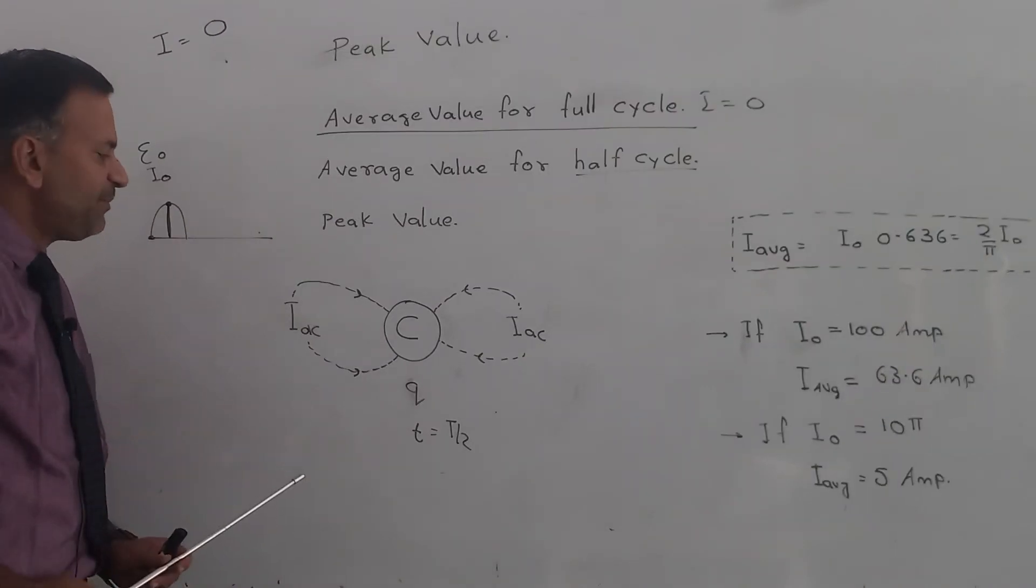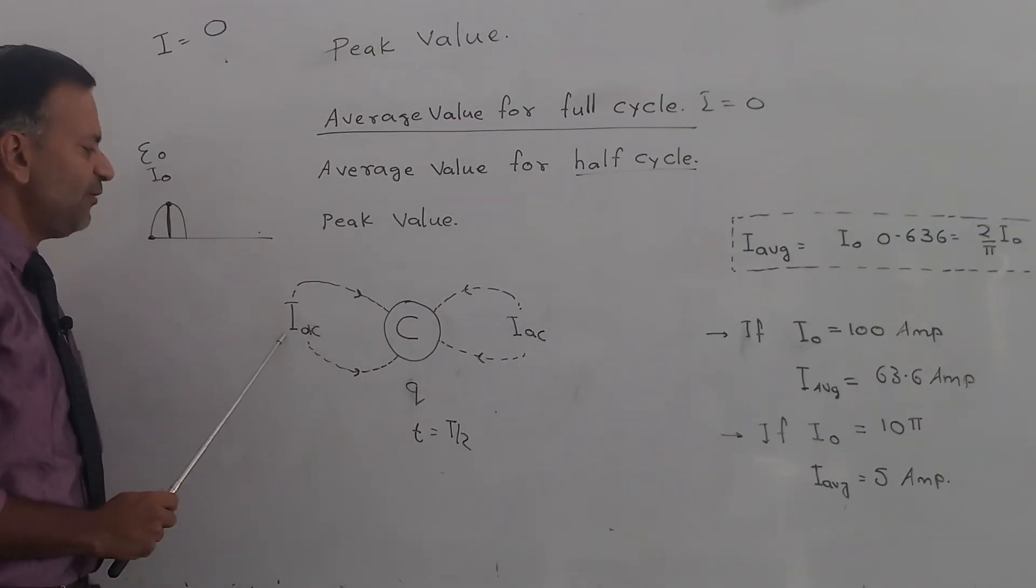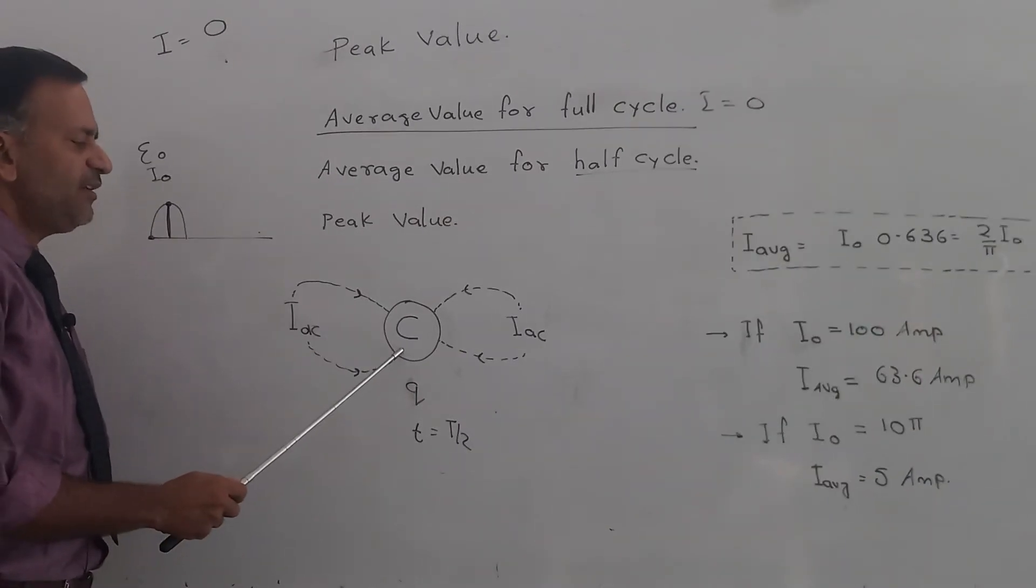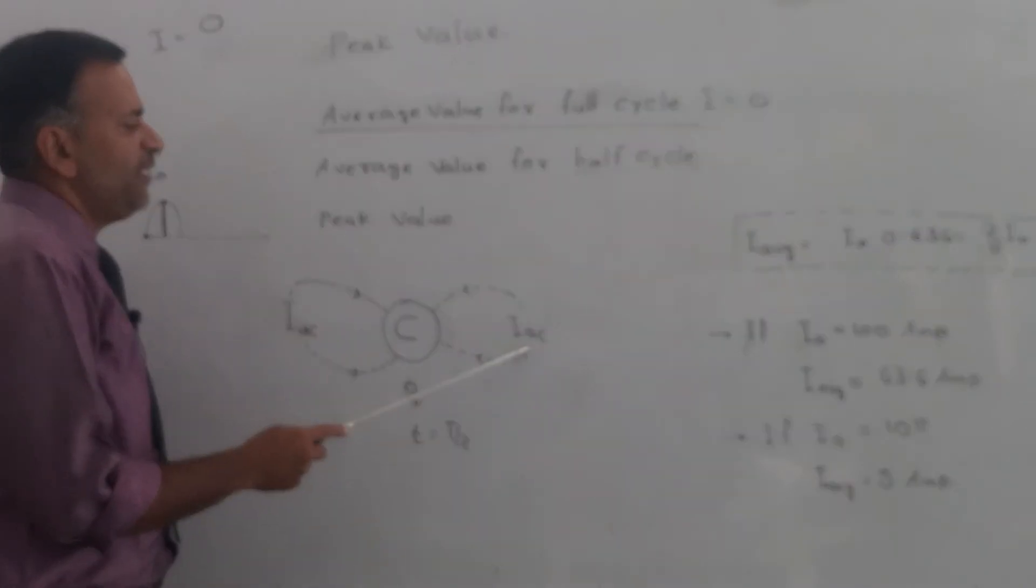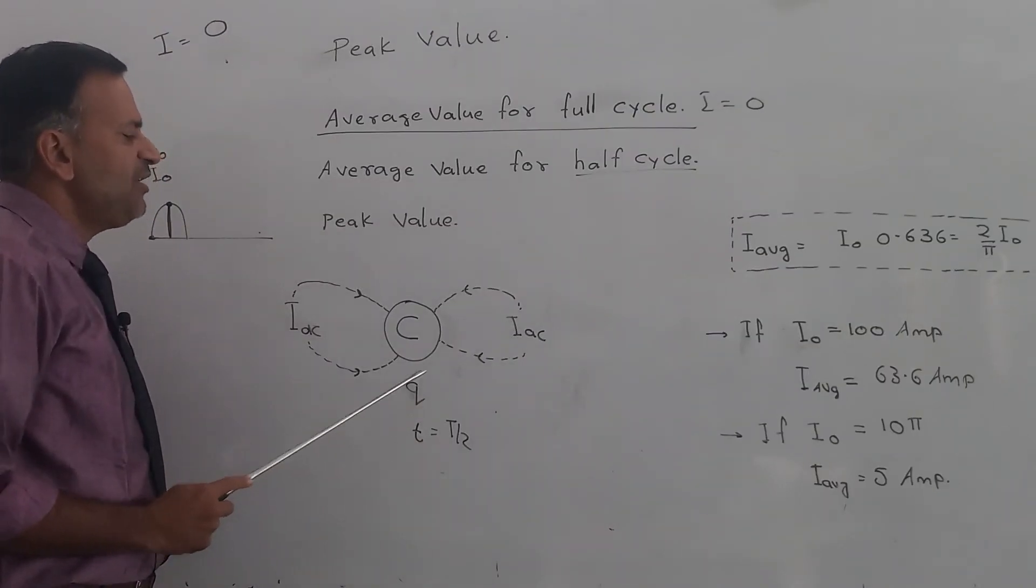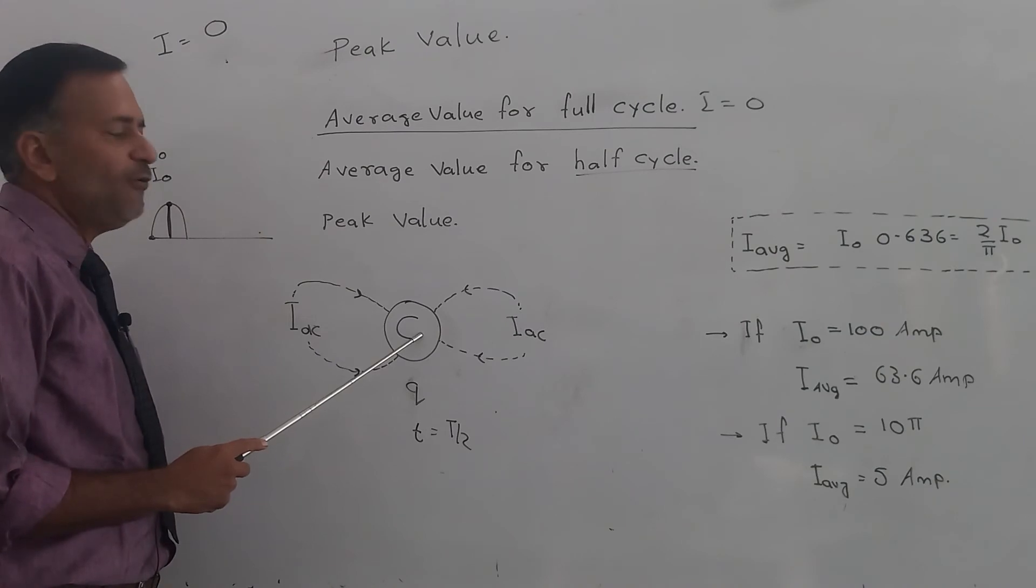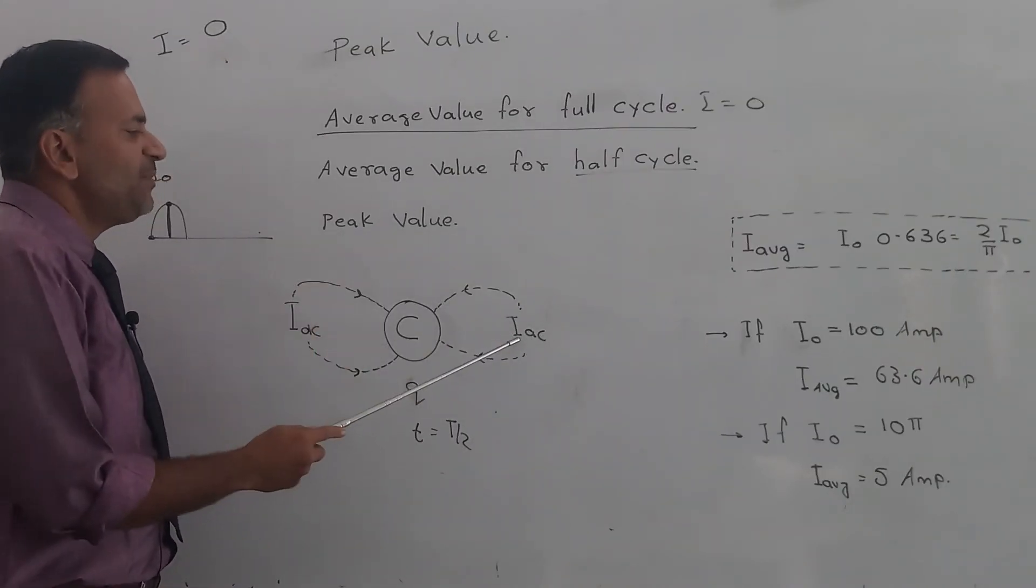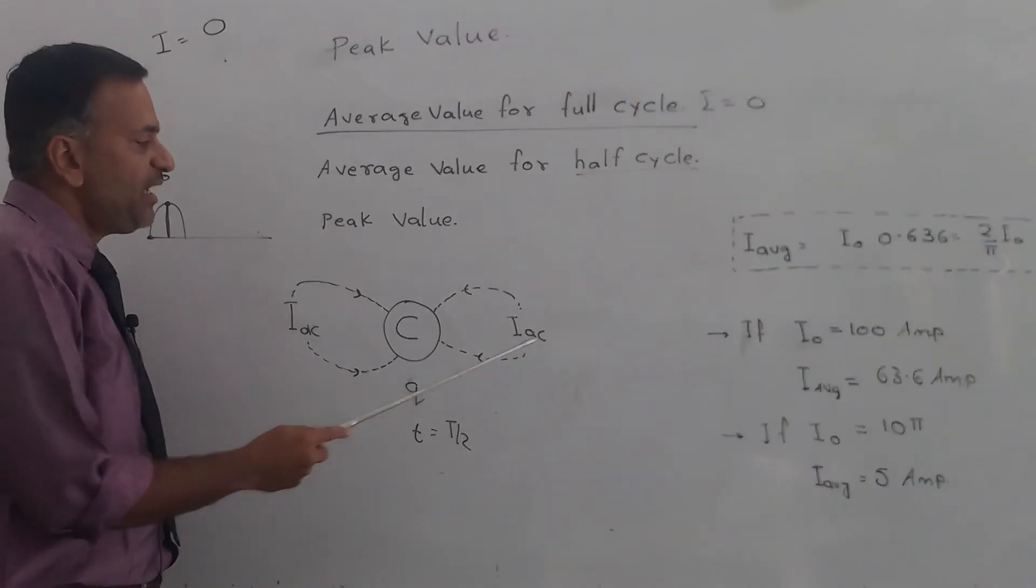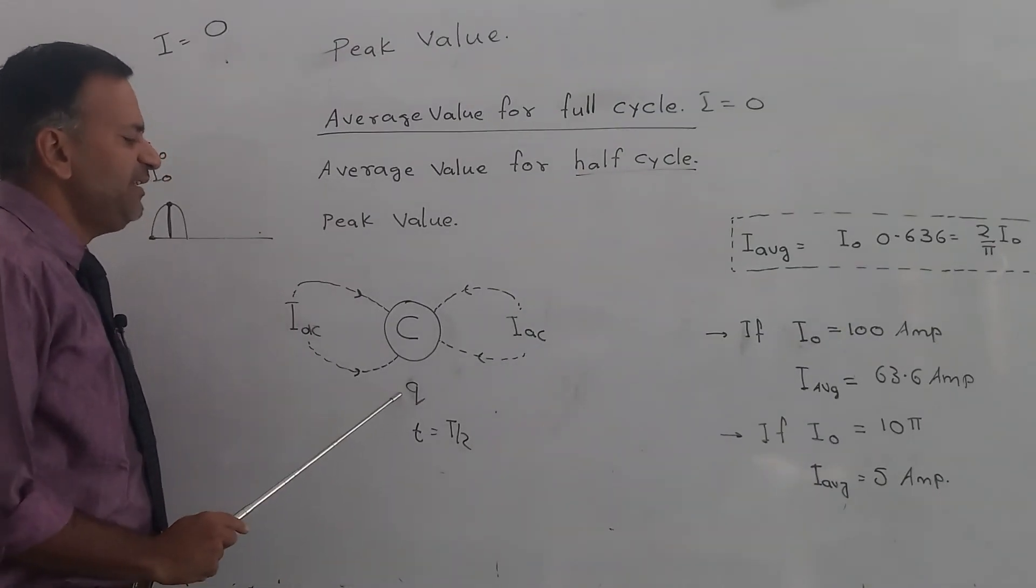If I use DC current to transfer charge Q in time T by 2, I can use IDC. This IDC will send charge Q to this circuit in time T by 2. Now if I want to do the same work with AC—provide the same charge to this circuit in the same time—I need IAC. Both these currents are transferring the same charge in the same time.